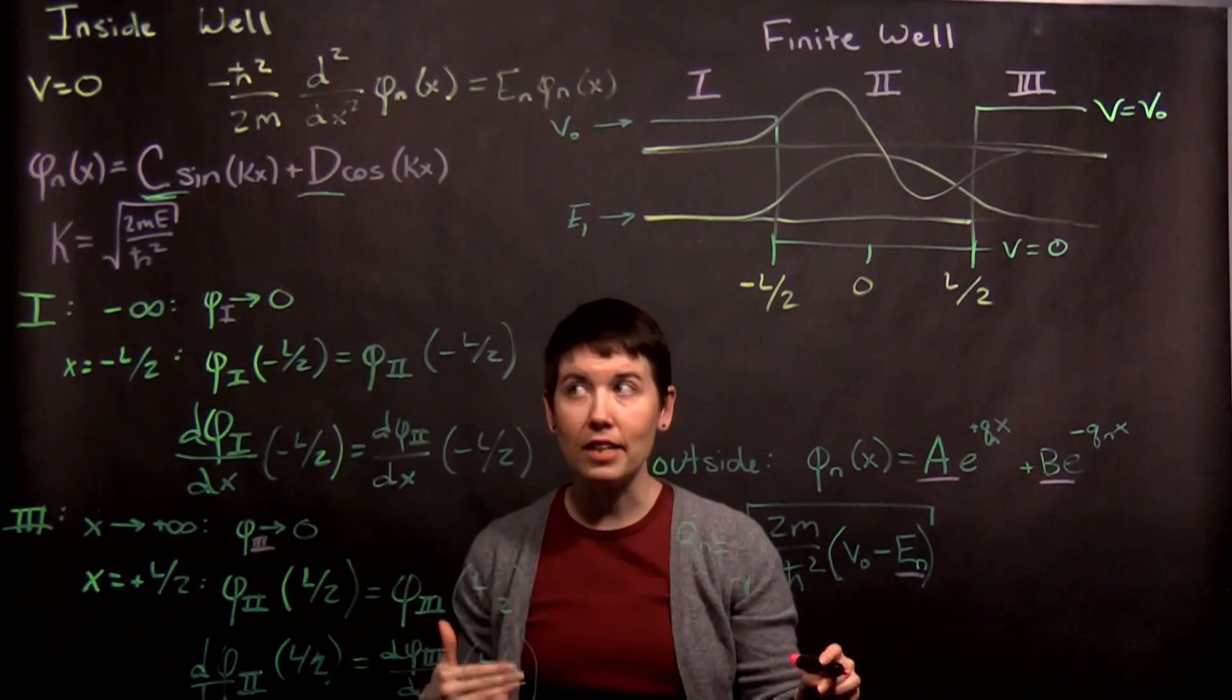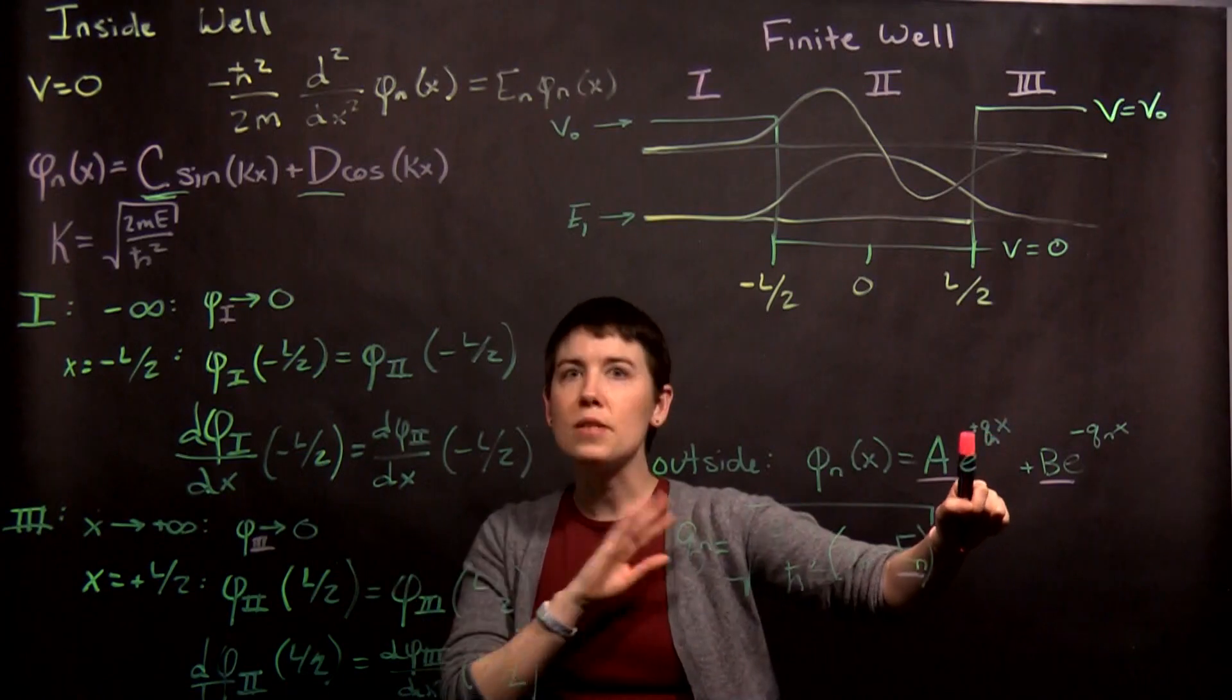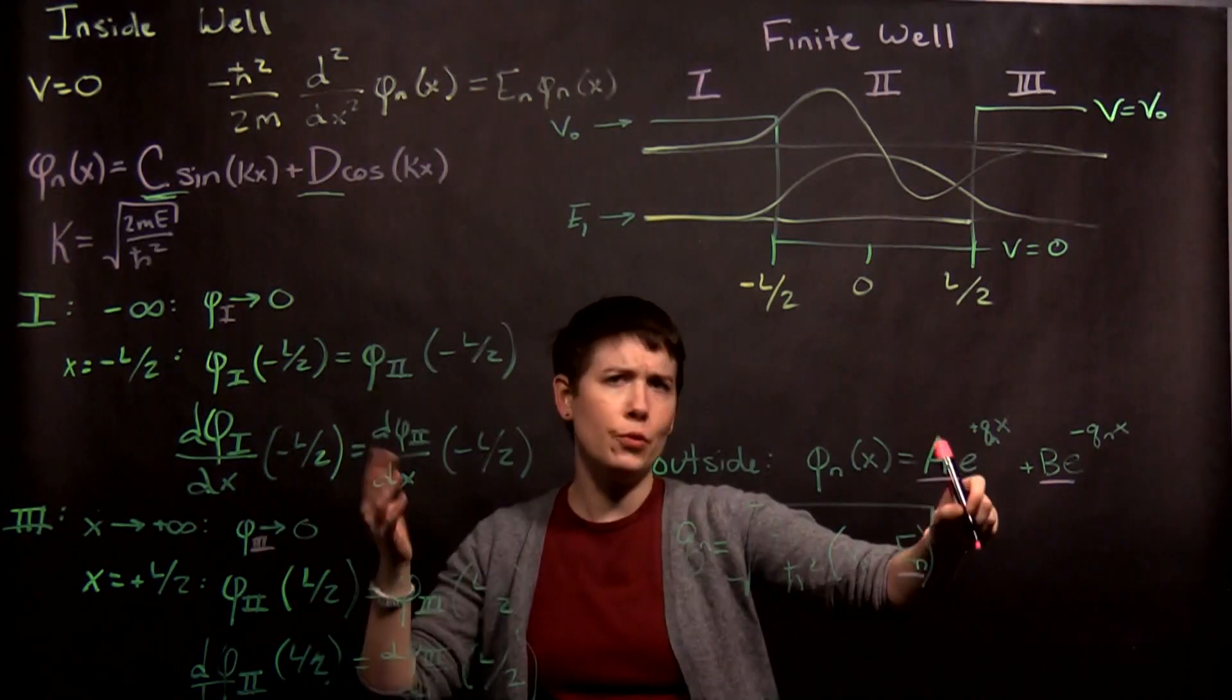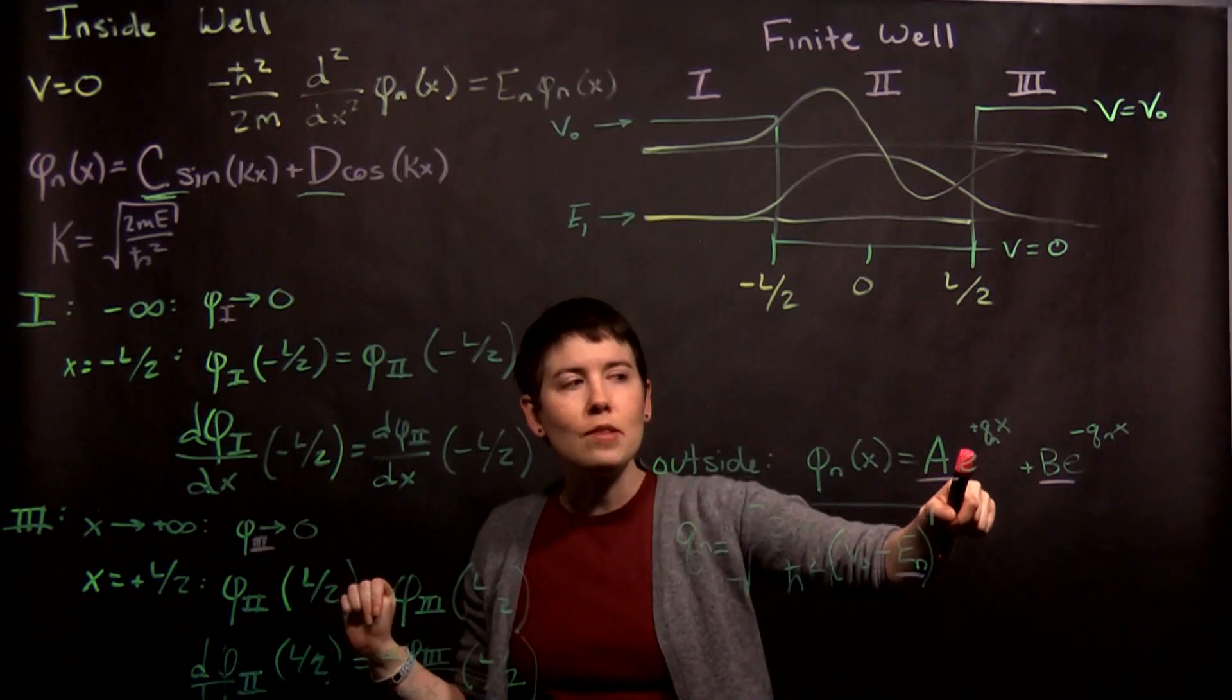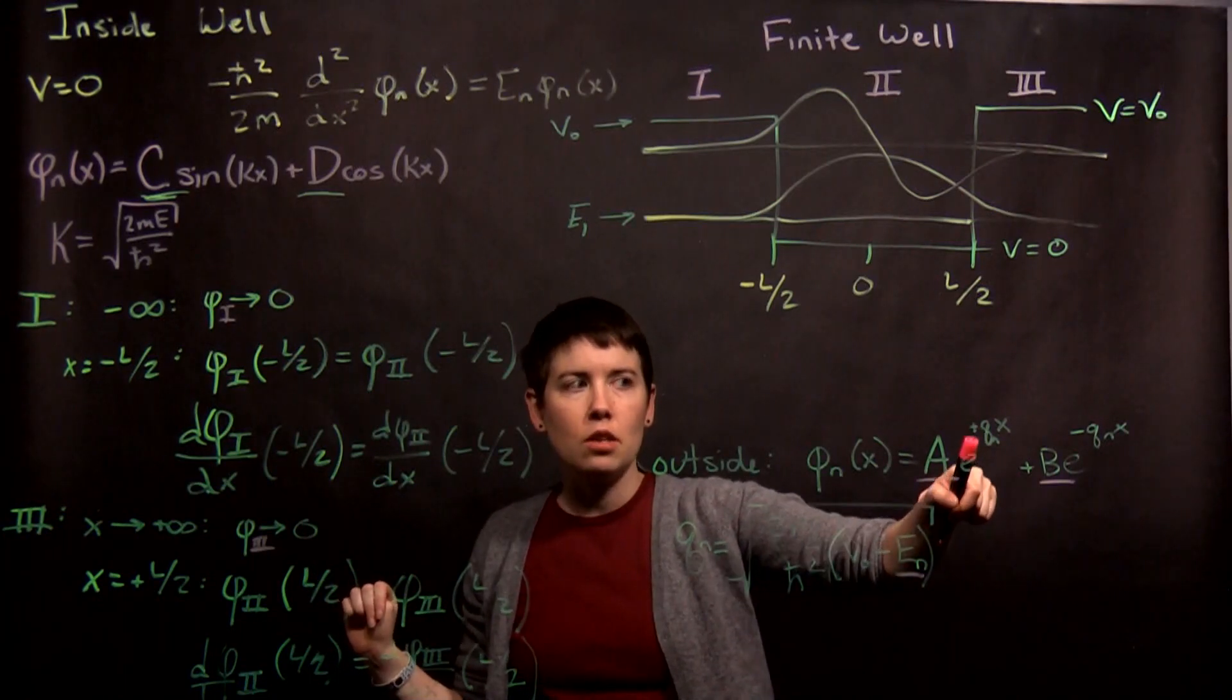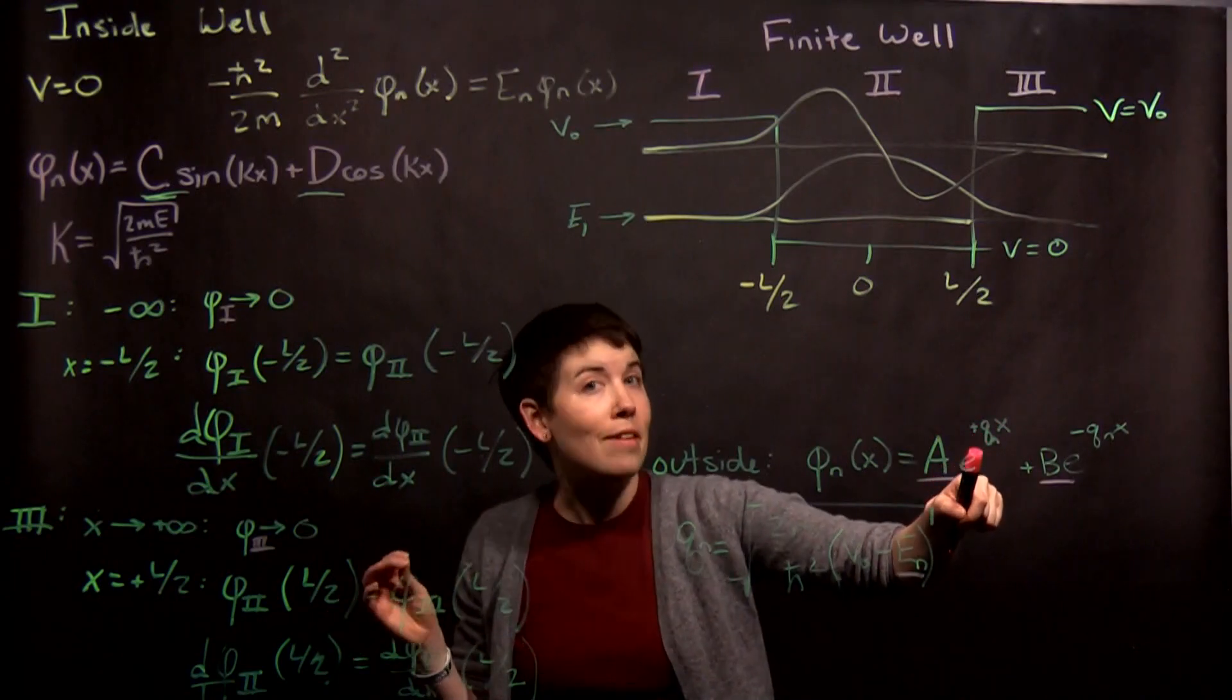So, as we go to negative infinity, what happens to this term? So, q is going to be some positive value, one, two, probably much harder value, but think about that. So, what is e to the, say, two x, where x becomes negative infinity?